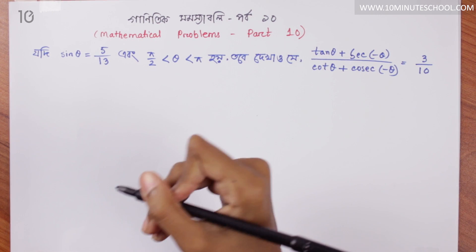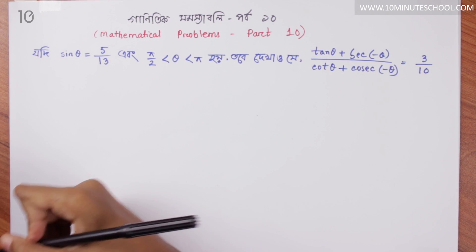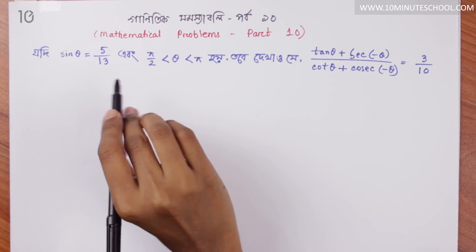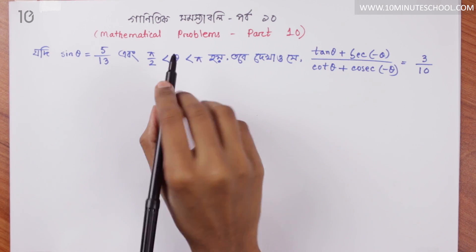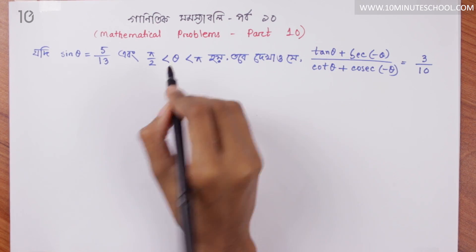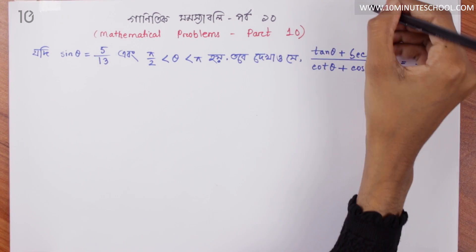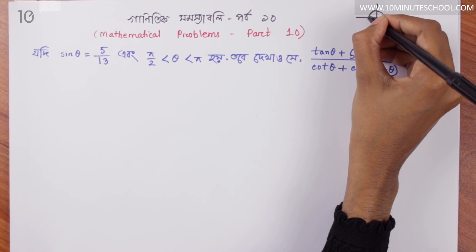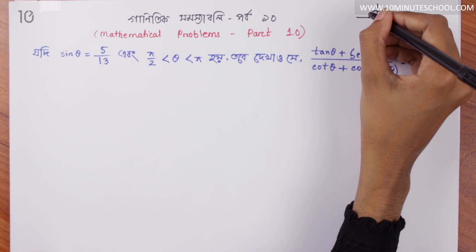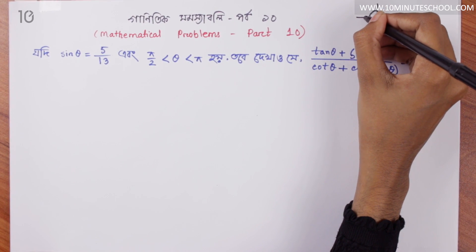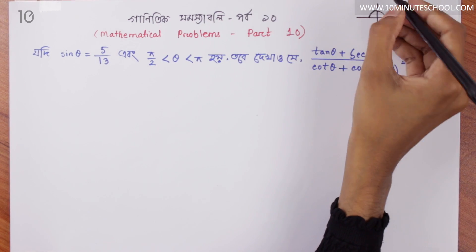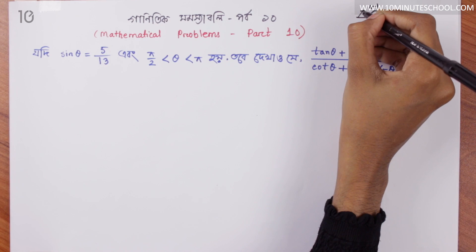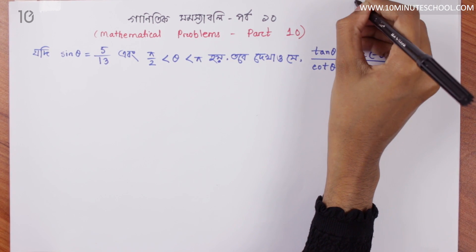Mathematical problem: sin θ = 5/13. The range is that θ is more than π/2 (90°) but less than π (180°), meaning θ is in the second quadrant. In the second quadrant, sin is positive.